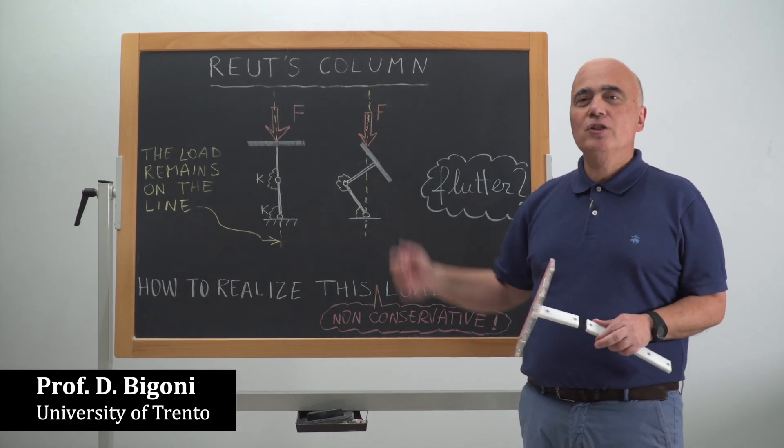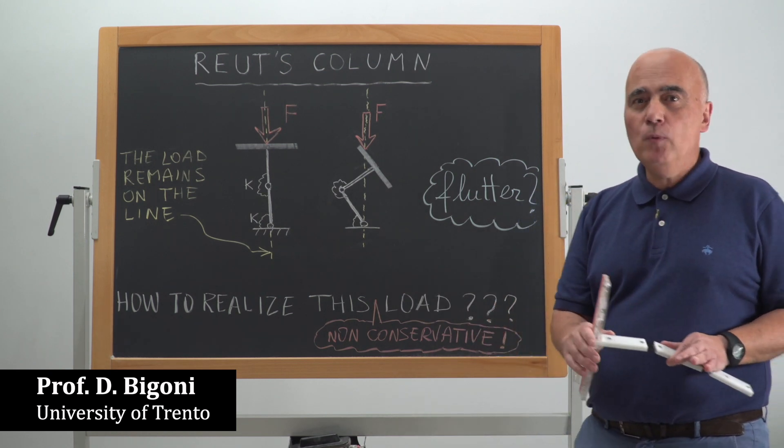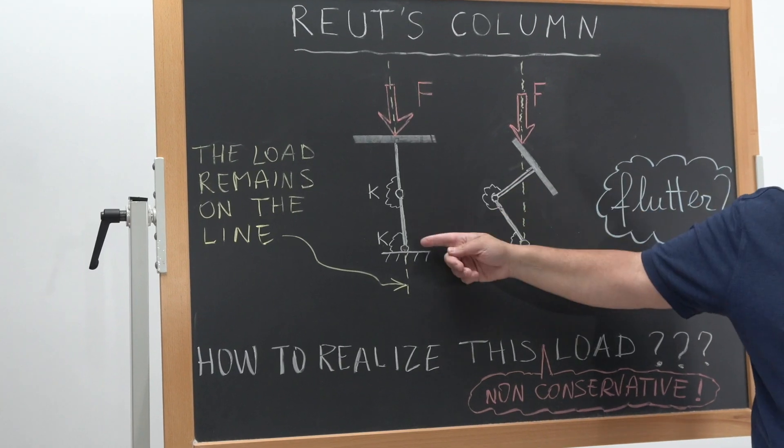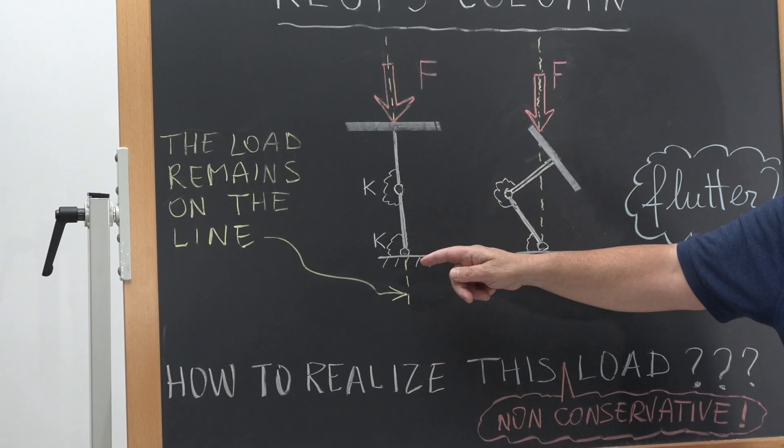Today I would like to introduce the so-called Reut's column problem, and I will introduce this problem with reference to an elastic double pendulum, two rigid elements connected through elastic hinges.